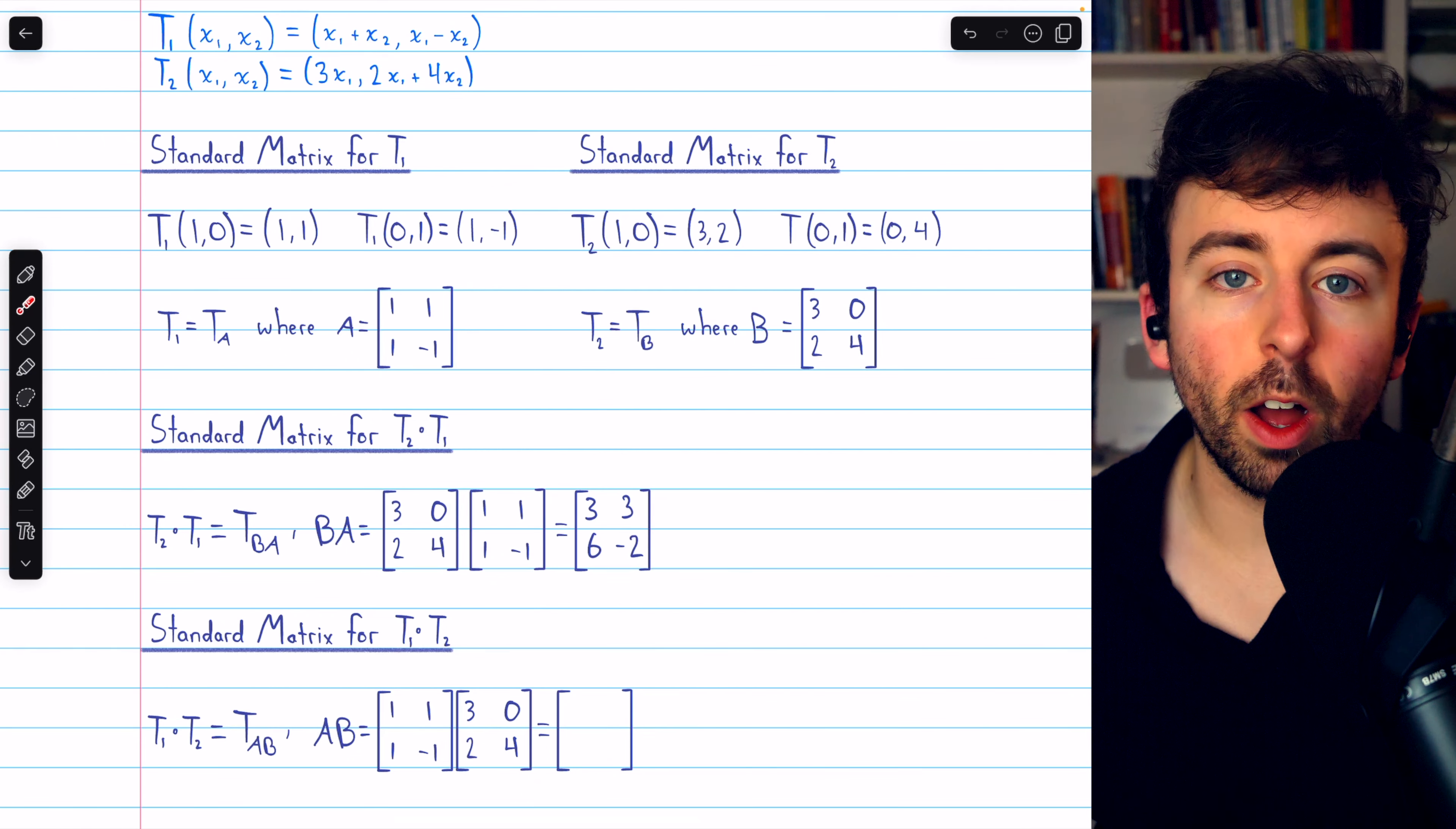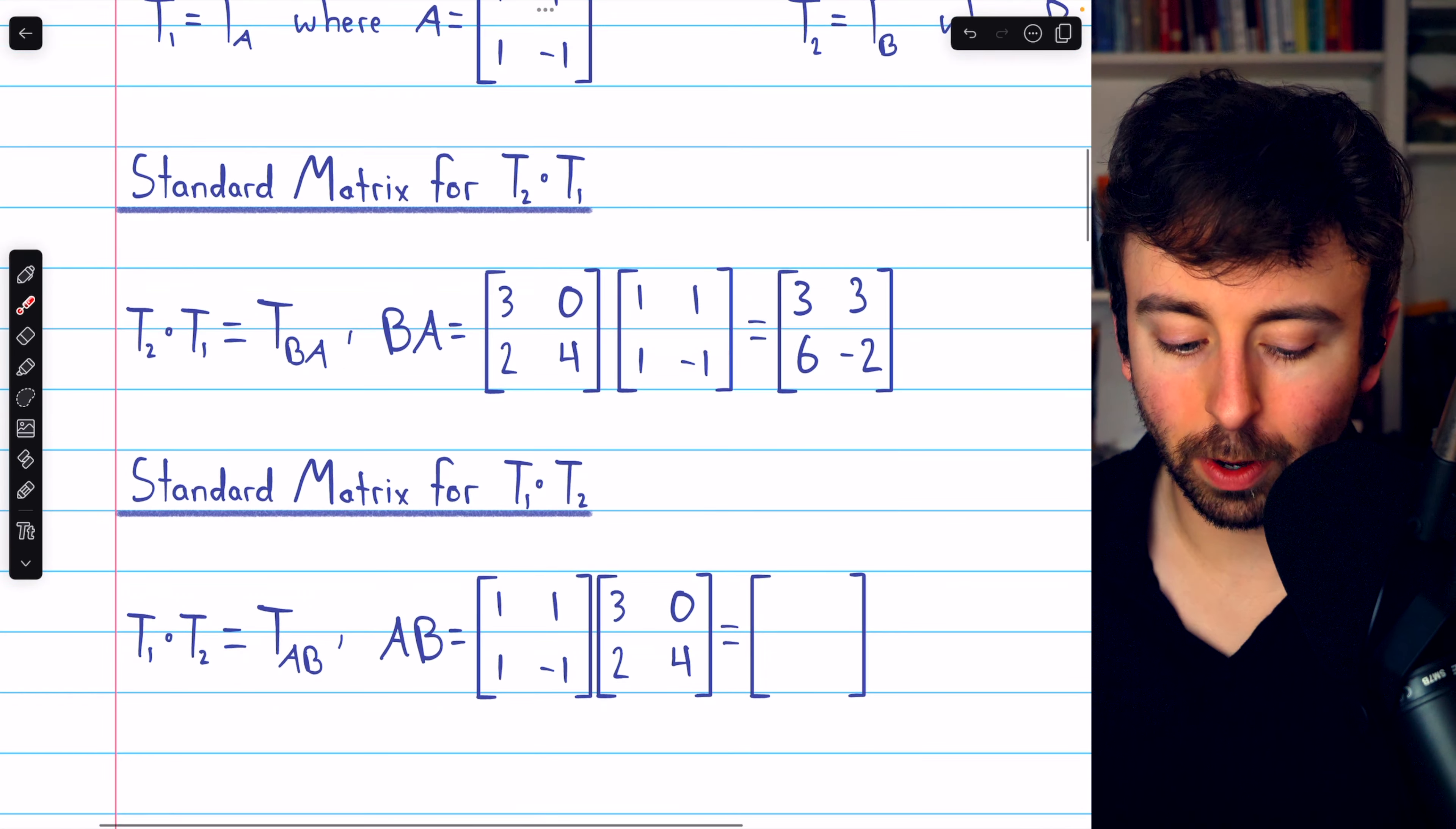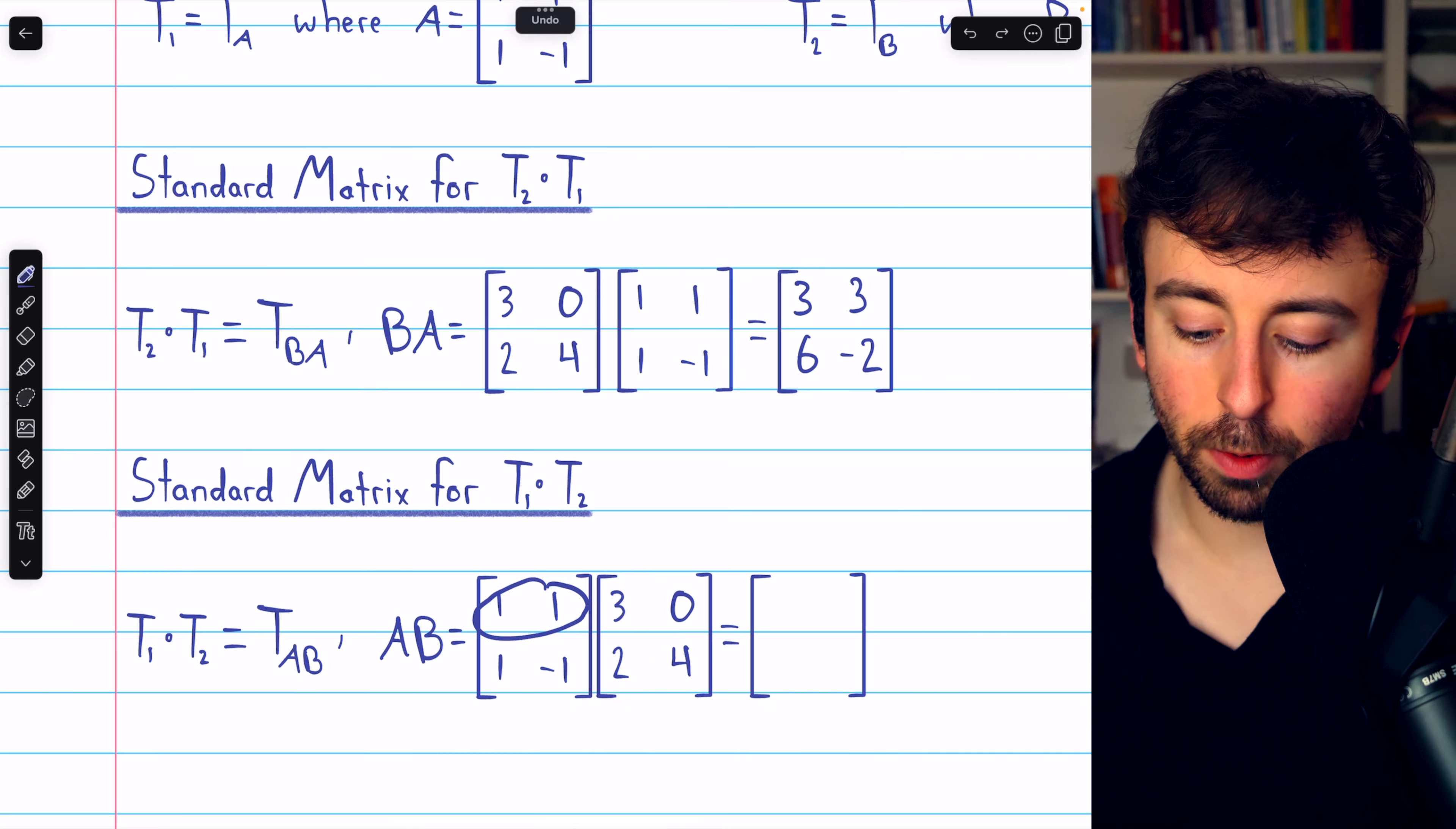In the same exact way, we find the standard matrix for the composition in the other order, T1 circle T2. Recall that the composition of matrix transformations is not, in general, commutative. So we don't know what this is until we figure it out.